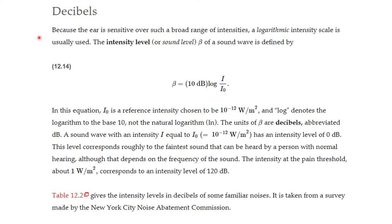Decibels. Because the ear is sensitive over such a broad range of intensities, a logarithmic intensity scale is usually used. The intensity level or sound level beta of a sound wave is defined by beta is equal to 10, and then this is a unit called decibel. So beta is equal to 10 decibel times the logarithm, and this is logarithm base 10, of i divided by i0. In this equation, i0 is a reference intensity chosen to be 10 to the minus 12 watts per square meter. And log denotes the logarithm base 10, not the natural logarithm. The units of beta are decibel, abbreviated dB.